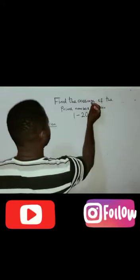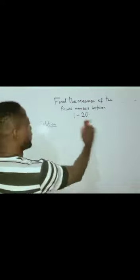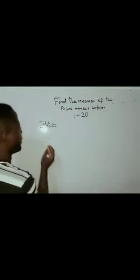The question says, find the average of the prime numbers between 1 to 20. Now, the first thing is to list out the prime numbers between 1 to 20.